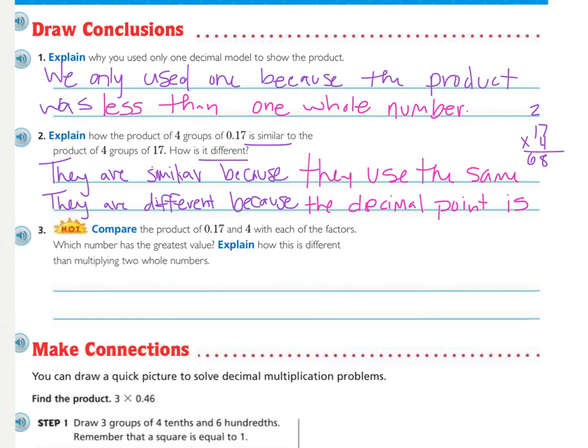They are similar because they use the same digits, the 6 and the 8, and they are different because the decimal point is in a different place for each of them. In 68, the decimal point is right here after the 8, and with multiplying by 17 hundredths, the decimal point is before the 6.